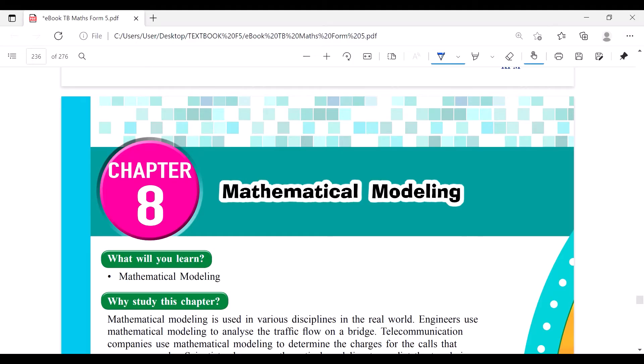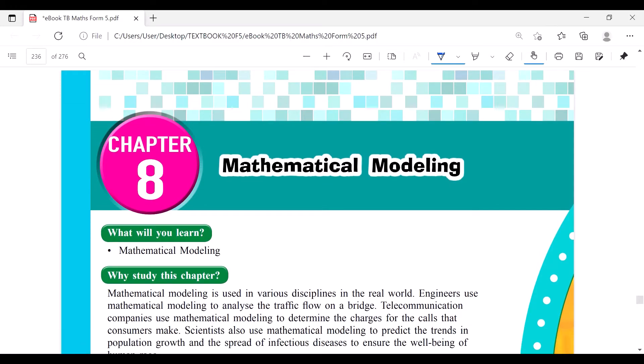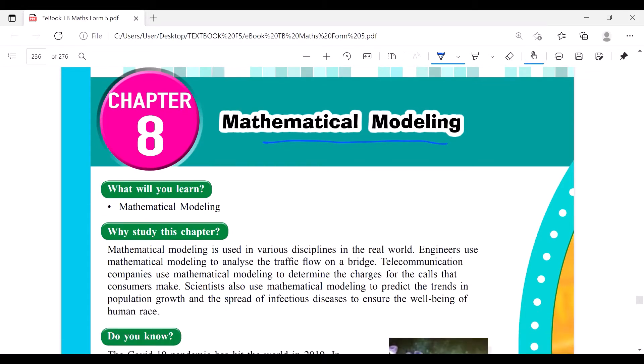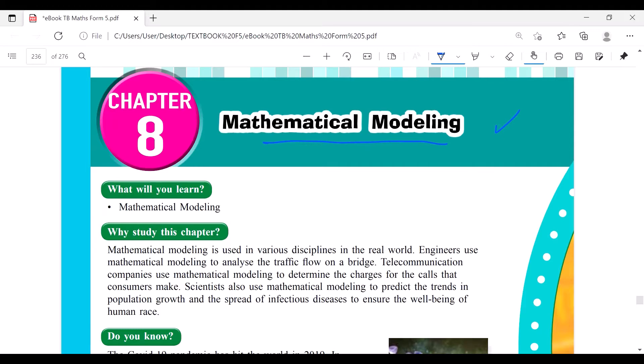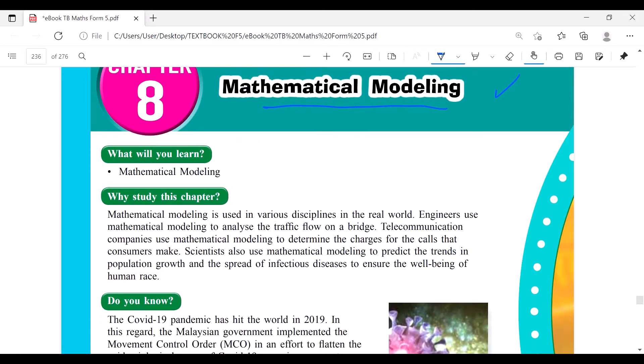Okay class, finally we go to the last chapter of our textbook, Math Form 5. It is mathematical modeling. This is a very new topic. We never learned this in KBSM. For KSSM it's very new, so we'll learn mathematical modeling.